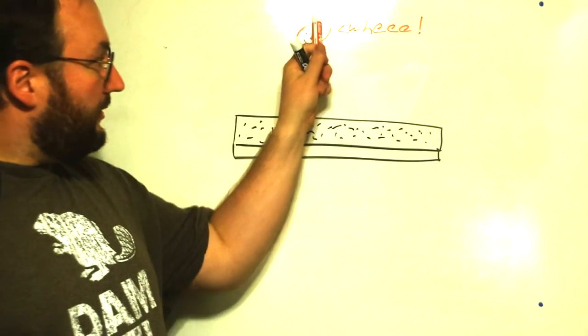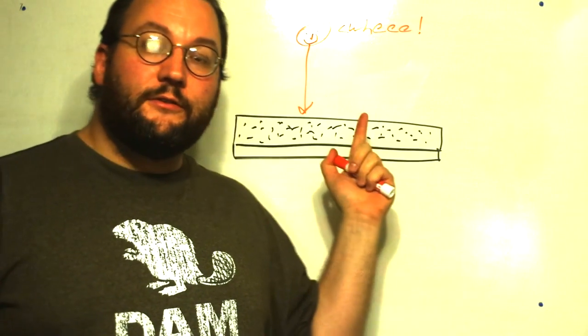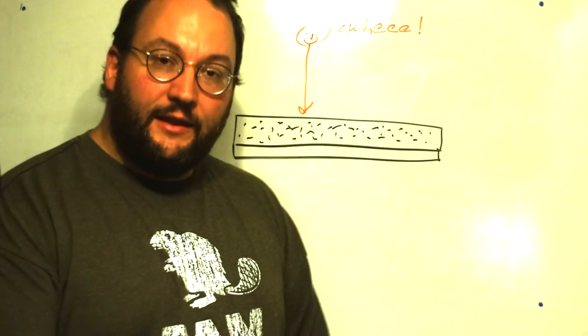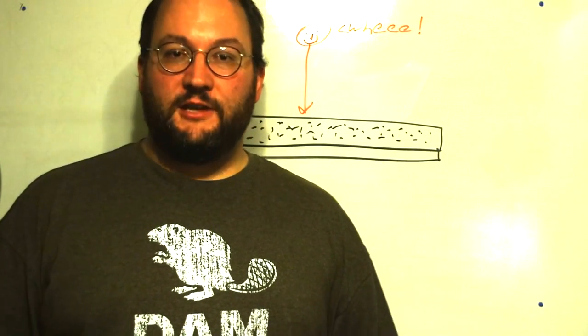When photons travel through your lens, through your camera and hit the crystals, what's going to happen is they're going to cause a chemical reaction in your crystals, which causes a crystal's property to change.